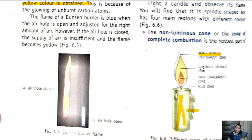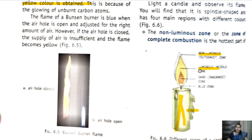Moving inside, the layer just after the outer layer will have an insufficient supply of oxygen — oxygen cannot reach there. Hence, the color of that middle layer of the candle flame will be yellow, and because it is yellow, it will be the luminous zone.